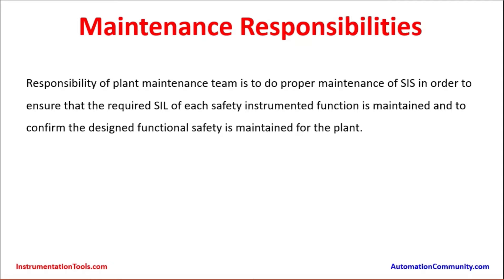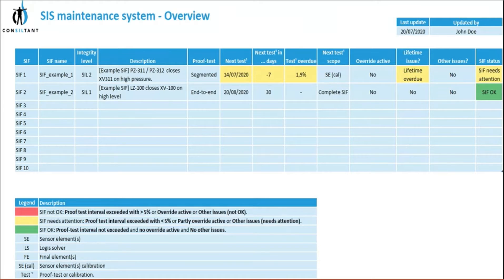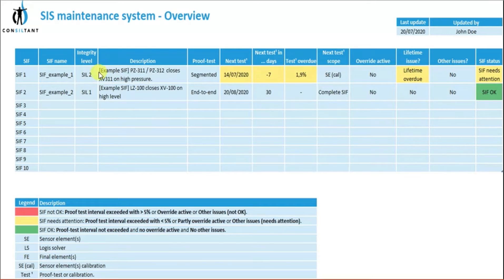Here we are seeing a sample of the maintenance system overview from an ERP tool. We can see SIS numbers SIS 1 to 10 with SIS names, Safety Integrity Levels — SIS 2 and SIS 1 types — and descriptions. For example, PZ 311/312 closes XV 311 on high pressure, where pressure instruments create the signal and close the XV, which is an on/off valve.